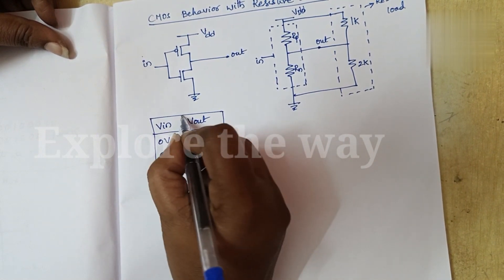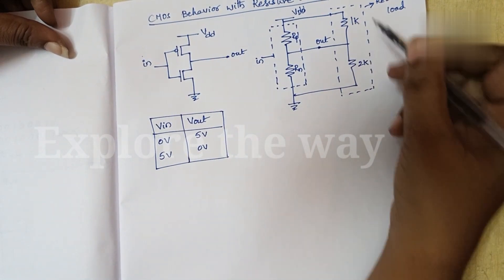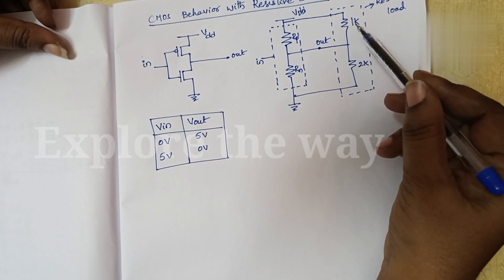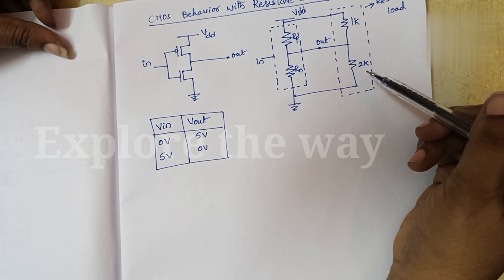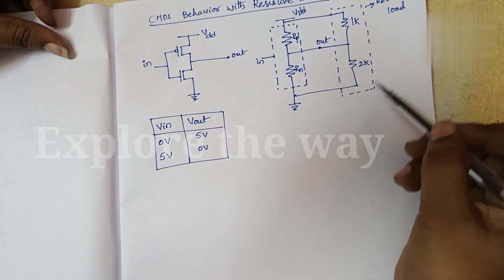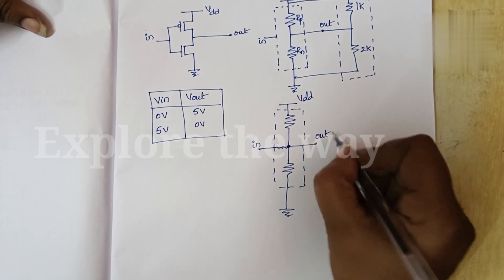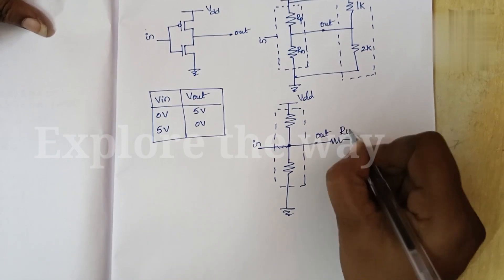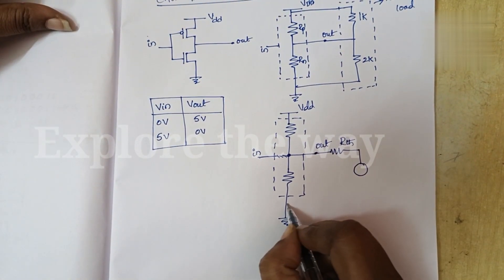Now we have to analyze how the behavior changes with this resistive load. The resistive load consists of two resistances: one is 1K ohm and the other is 2K ohm. Now let us draw the Thevenin equivalent of this resistive load. The Thevenin equivalent consists of a Thevenin resistance in series with a Thevenin voltage.